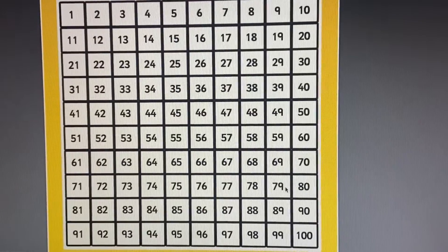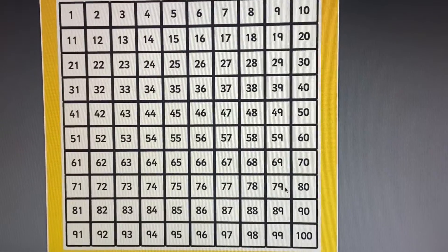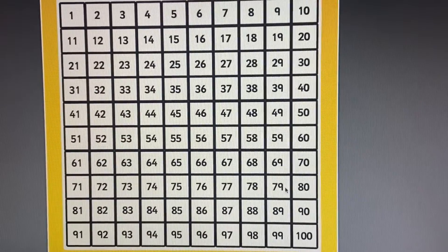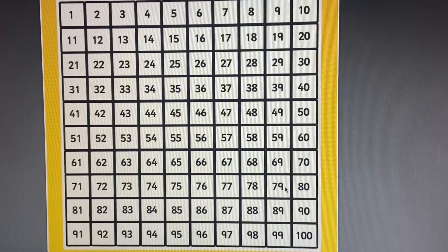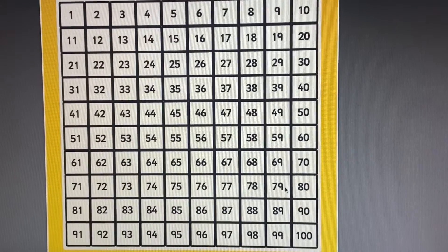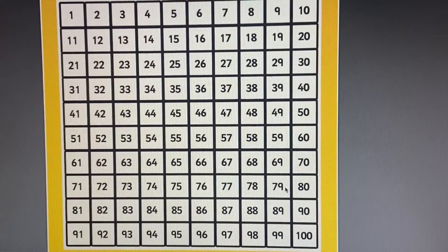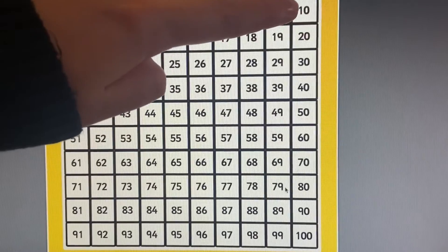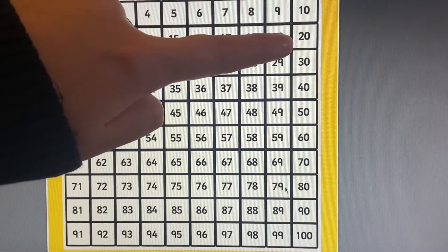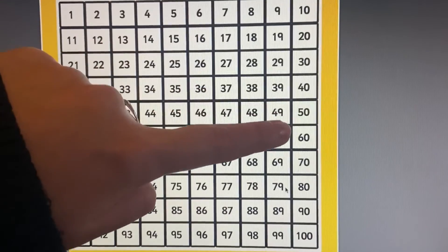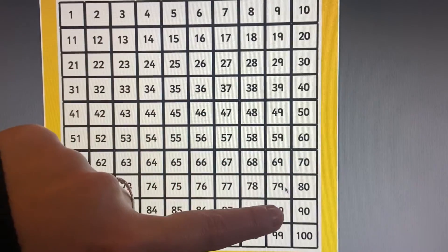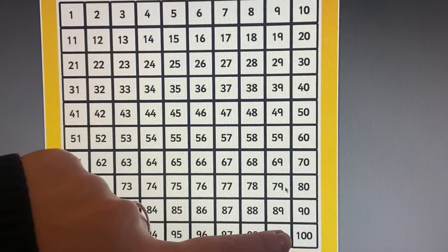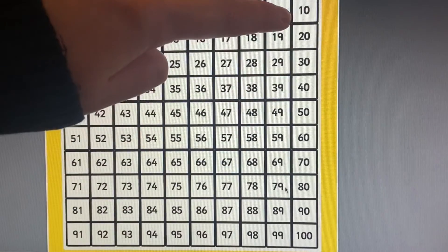Now if we look carefully at this 100 square, we can see that when we're counting in 10s, we are counting down one of the columns in the 100 square. Can you see which column we are counting down? 10, 20, 30, 40, 50, 60, 70, 80, 90, 100. And then when we're counting back in 10s, we're starting at the bottom and going all the way up to the top.